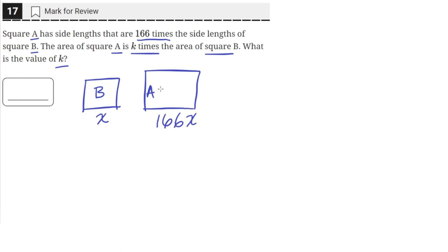And the area of square A is equal to k times the area of square B. So we'll say the area of square B is y, so we'll say it's ky. What is the value of k?